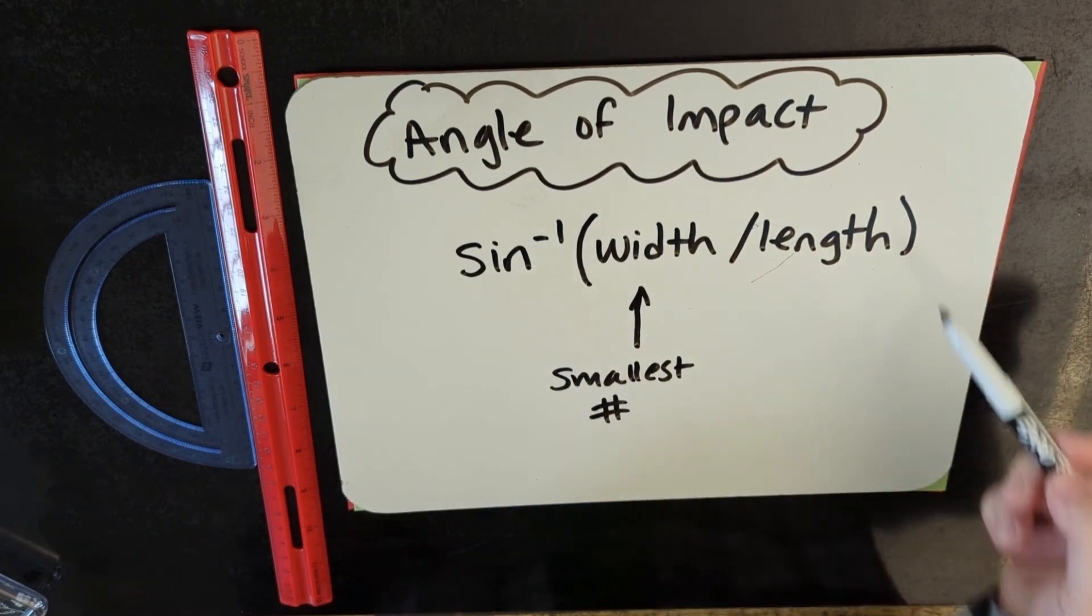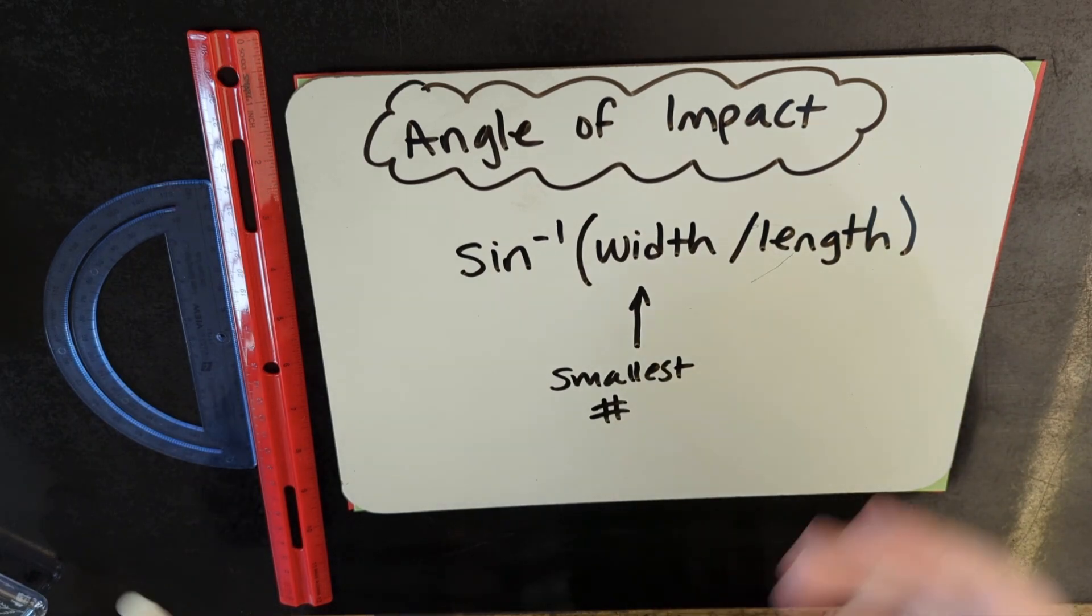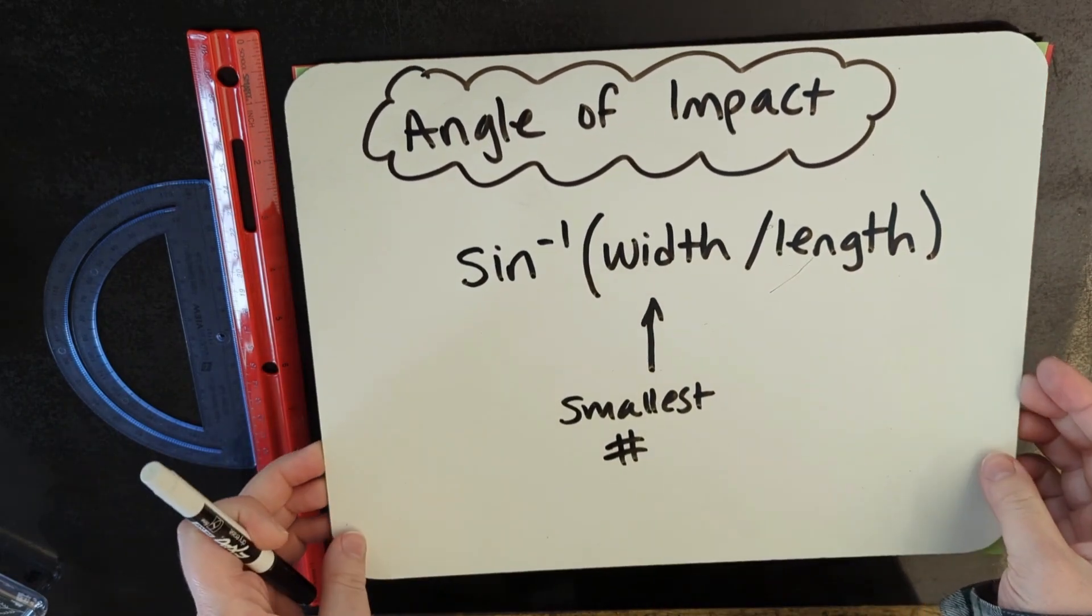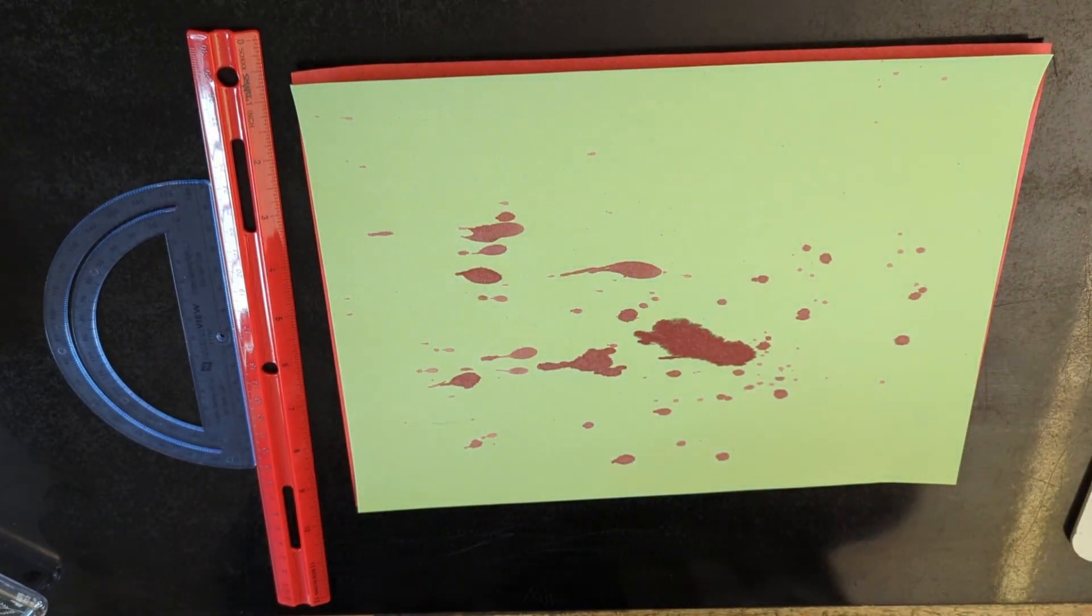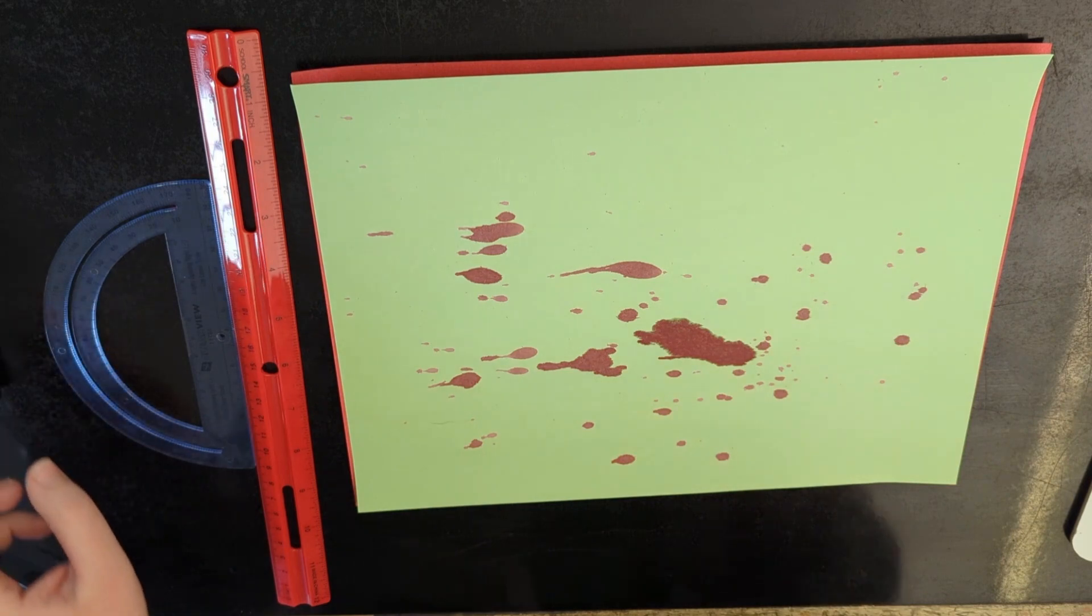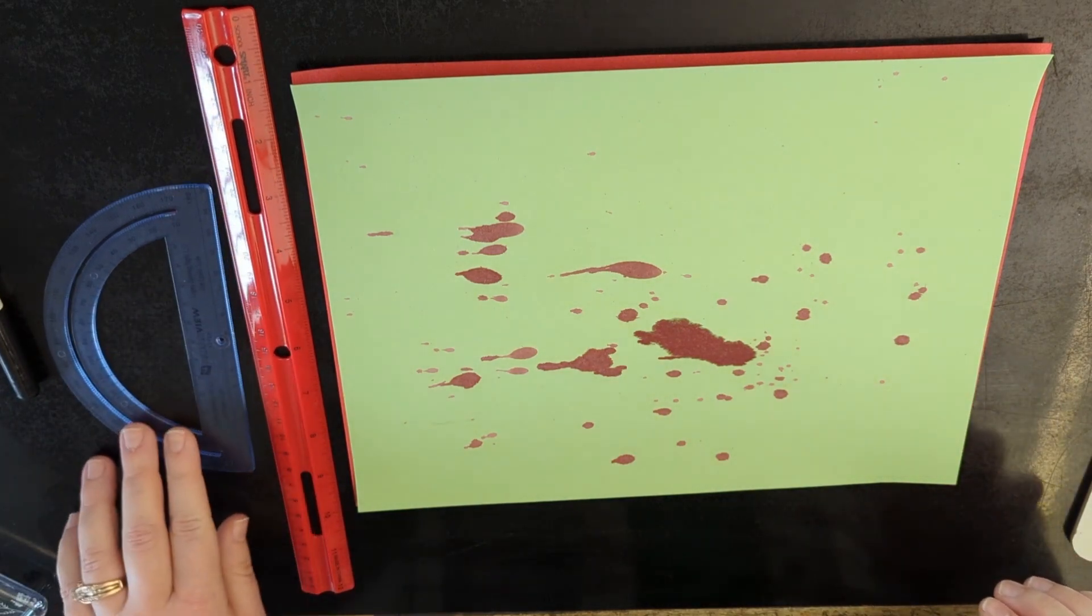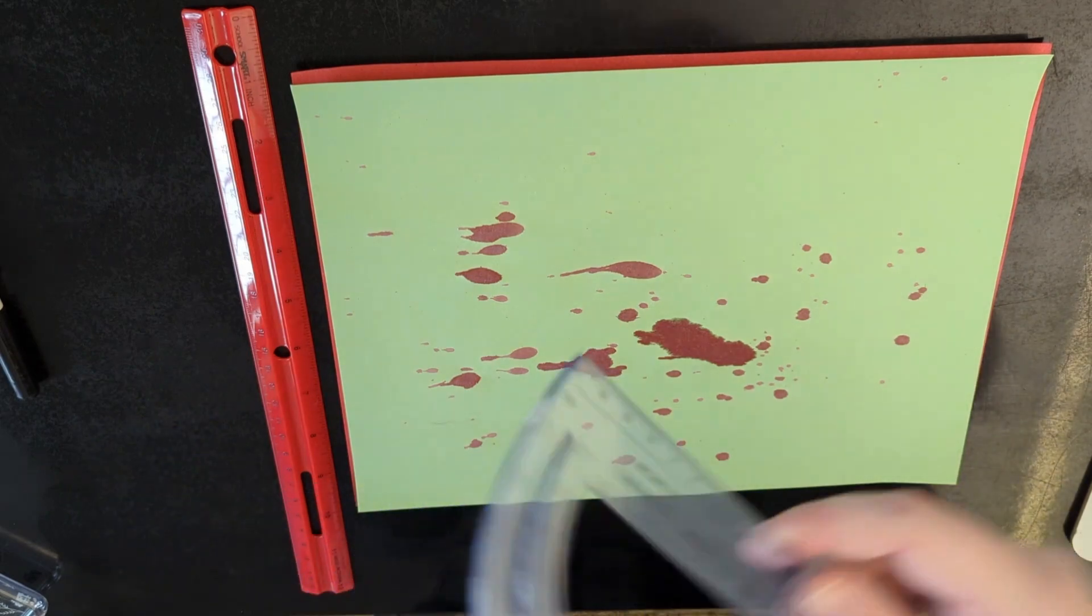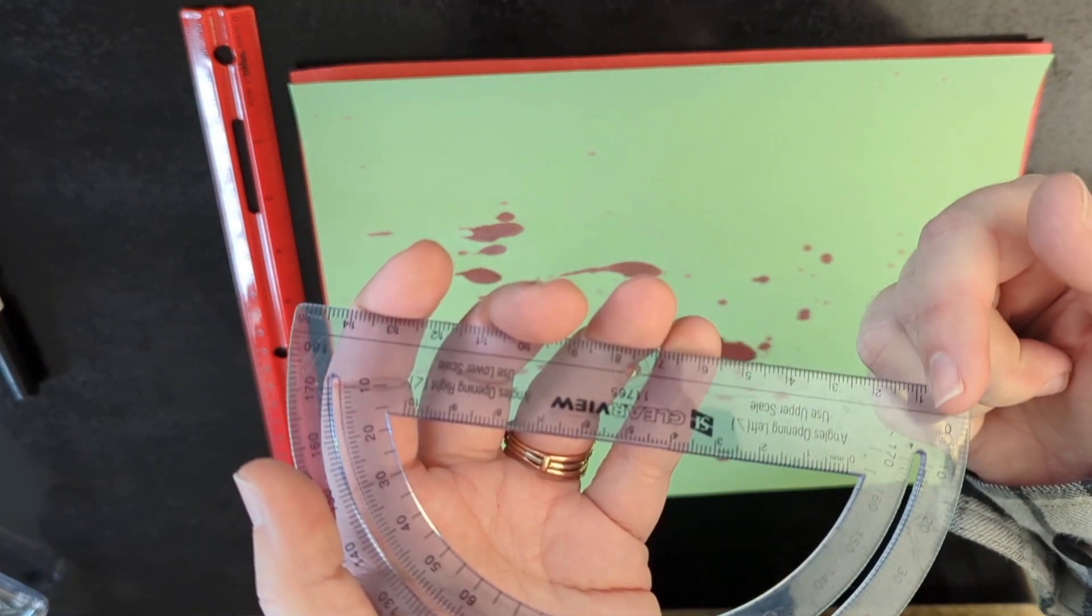By using this equation and by measuring each blood drop we'll be able to calculate it. So I made some blood spatter and the tools you will need for this are a ruler or a straight edge and then I use a protractor that measures in millimeters.